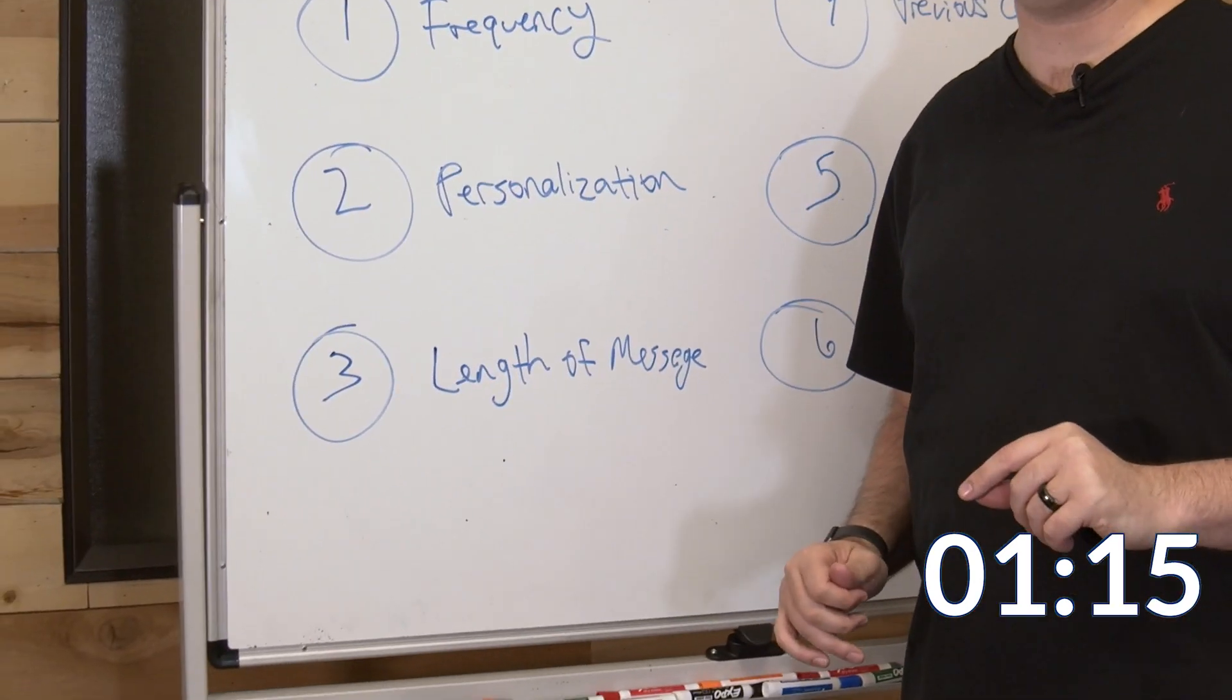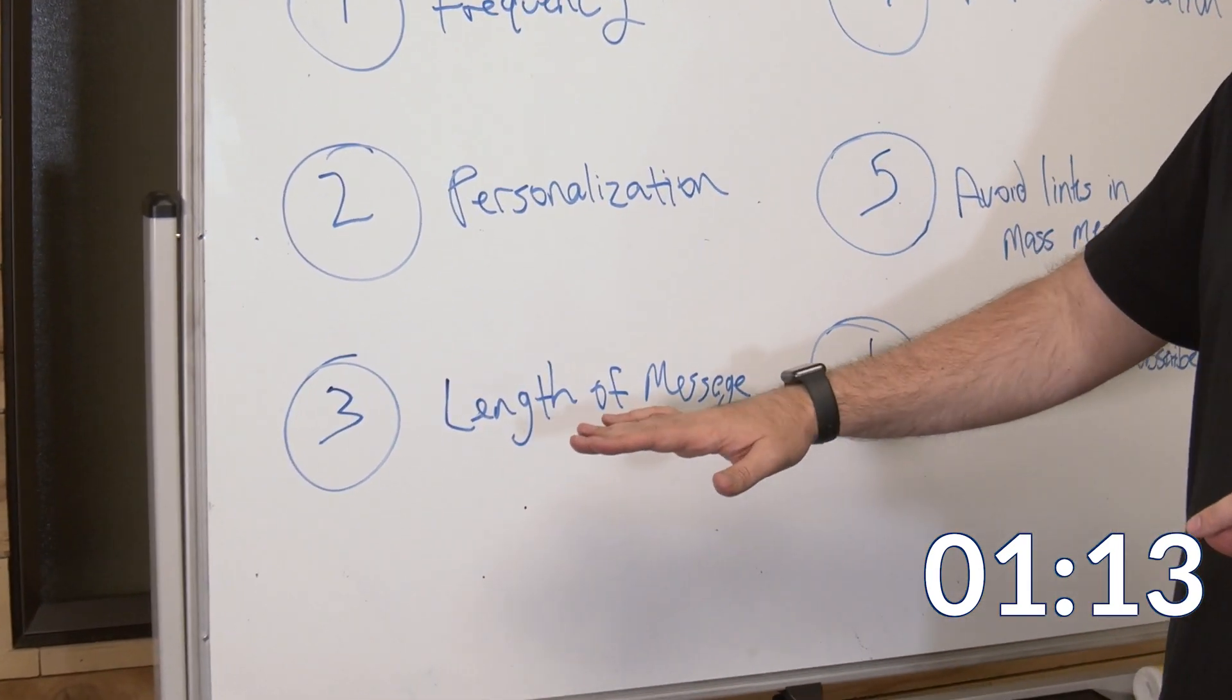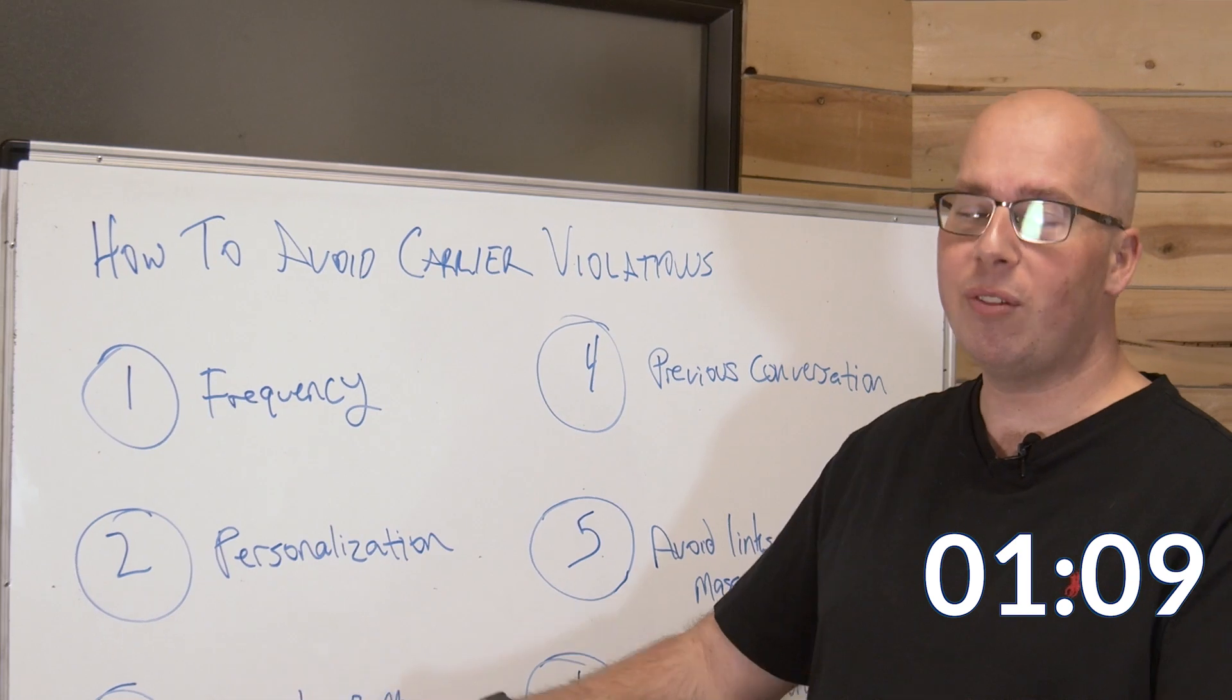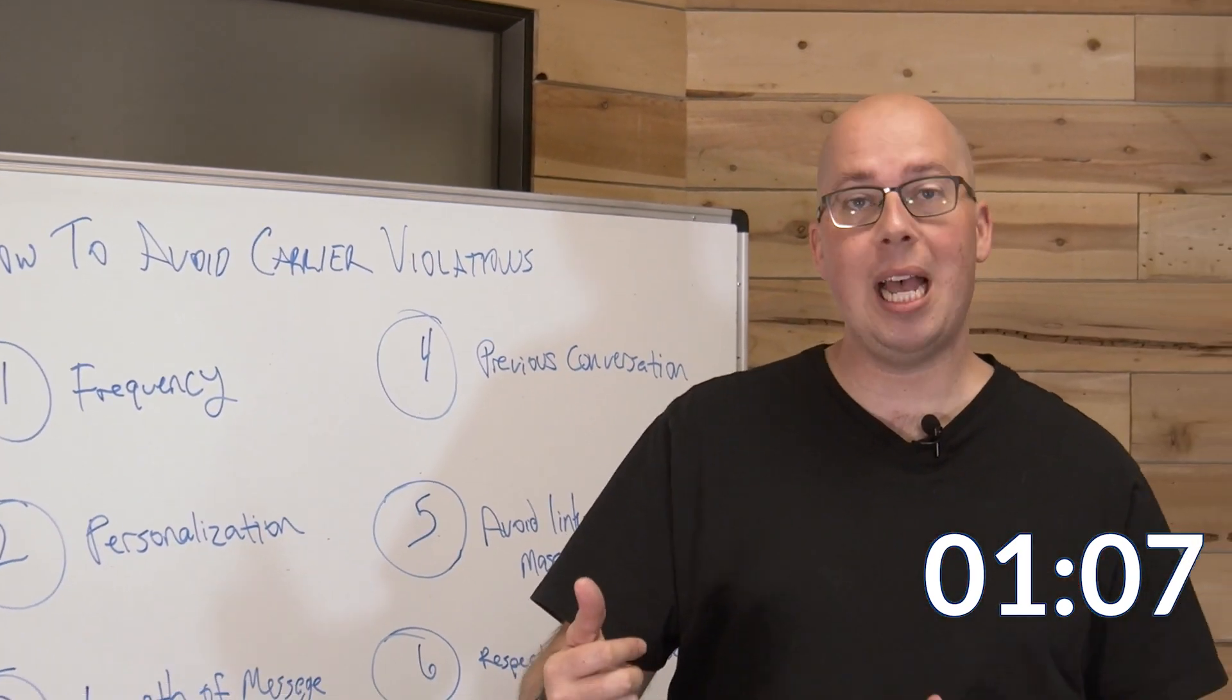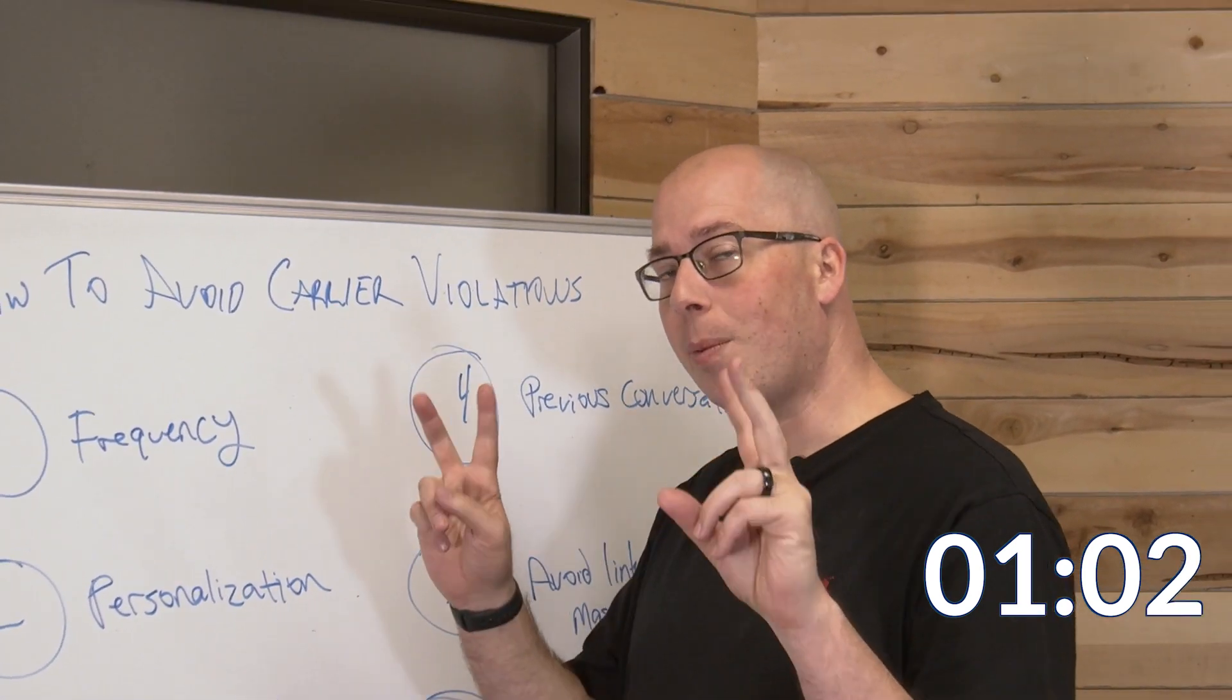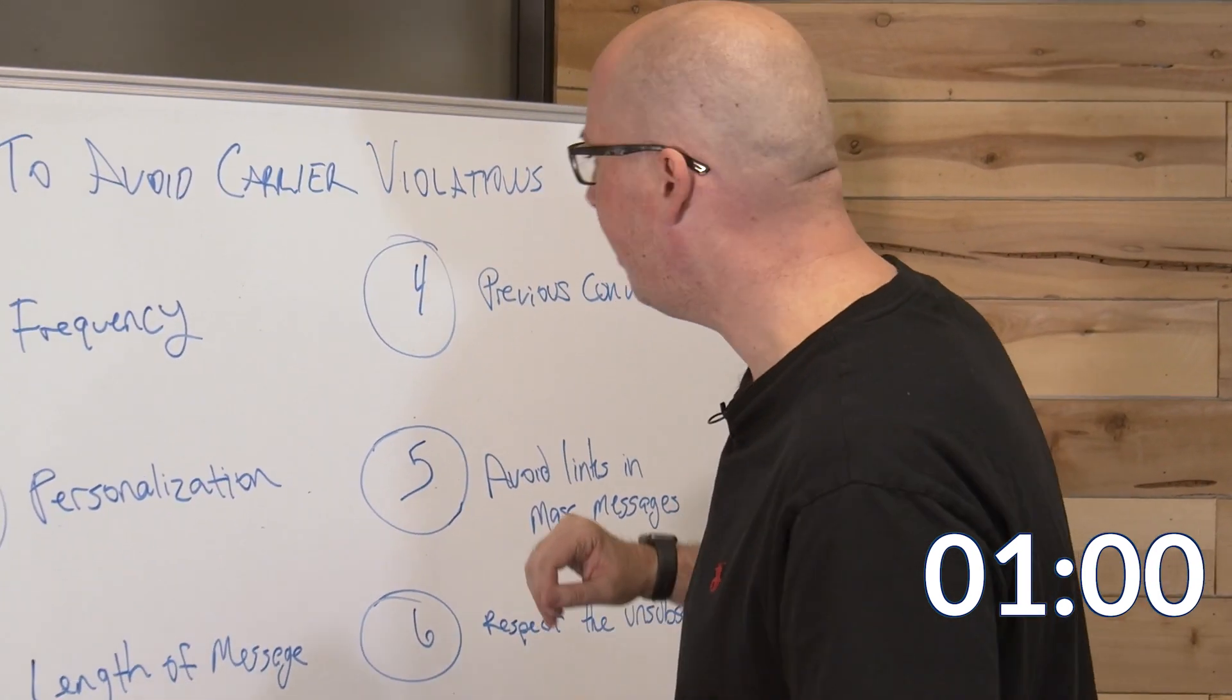Number three, the length of the message. Your message should be under 160 characters, your first message. After that, you can make it as long as you like as you're conversating, but that first one, you should keep it so it's only a single segment as it gets delivered to your contacts.